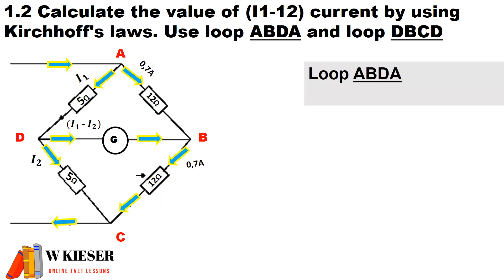Right, let's go ahead and look at loop ABDA. Now, 0 is equal to 0.7 amps multiplied by the 12-ohm resistor minus 5 ohms multiplied by I1. And I1 is the unknown variable that we need to calculate.